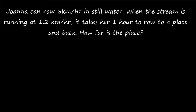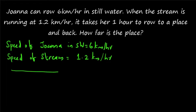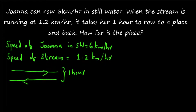Welcome to today's class. Today's question: Joanna can row at 6 kilometers per hour in still water. When the stream is running at 1.2 kilometers per hour, it takes her 1 hour to row to a place and back. How far is the place? The speed of Joanna in still water is 6 km/h, speed of the stream is 1.2 km/h, and she is rowing upstream and downstream. The total time taken is 1 hour. We need to find the distance to the place.